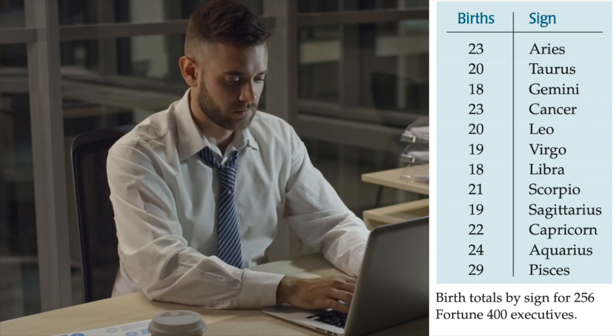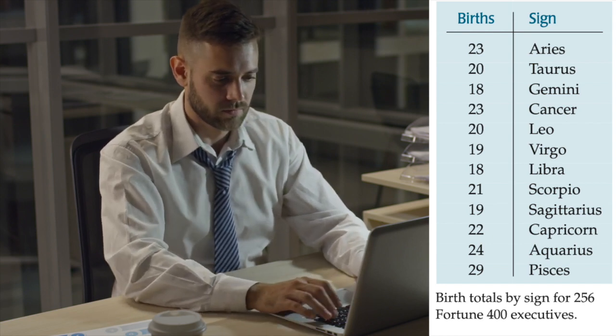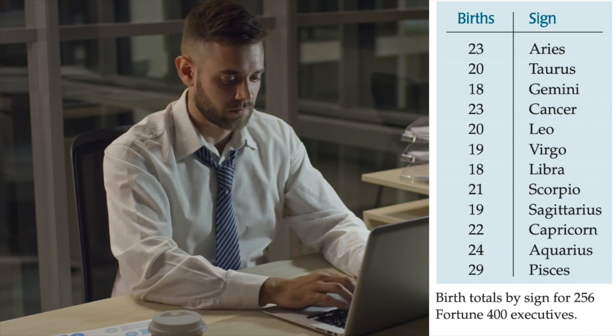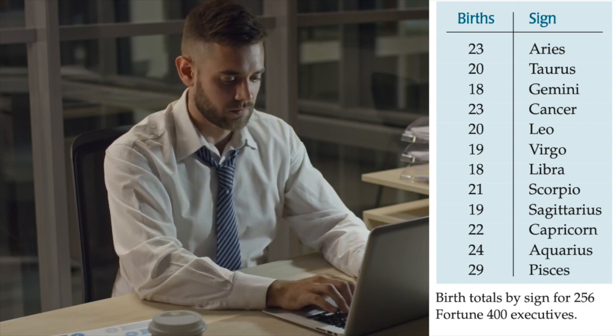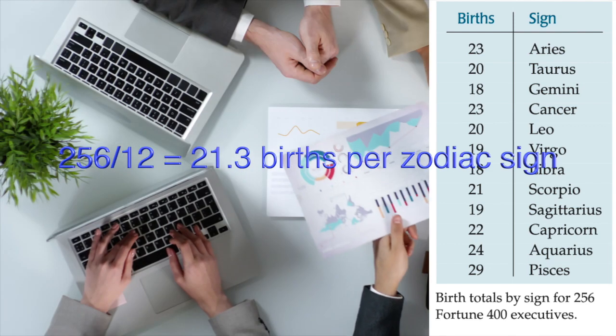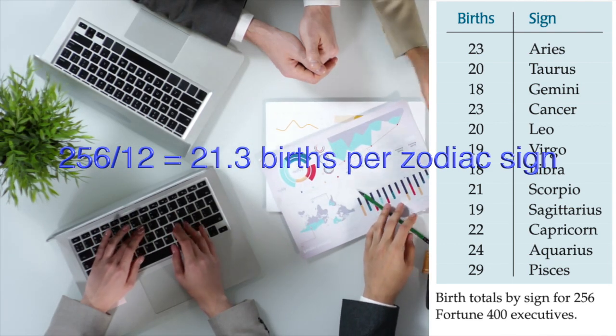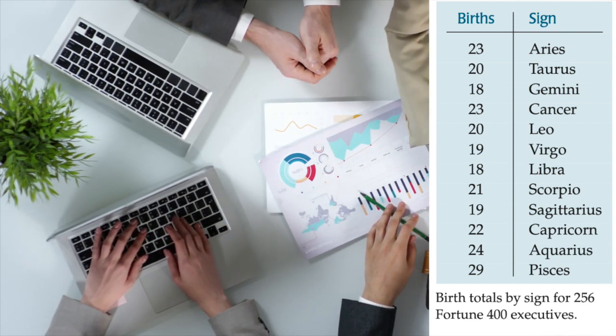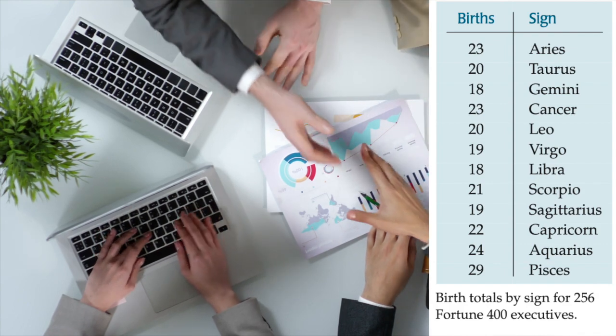If births were distributed uniformly across the year, we would expect about 1/12th of them to occur under each sign of the zodiac. That number is 256 divided by 12, or about 21.3 births per sign. How closely do the observed numbers of births per sign fit this simple null model?